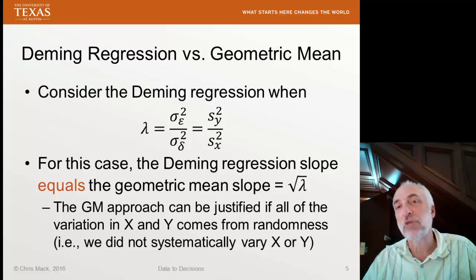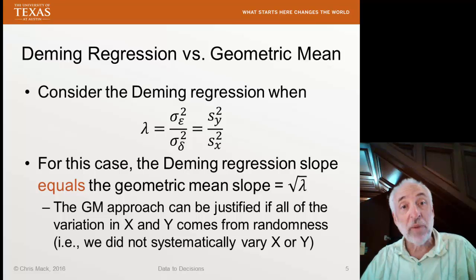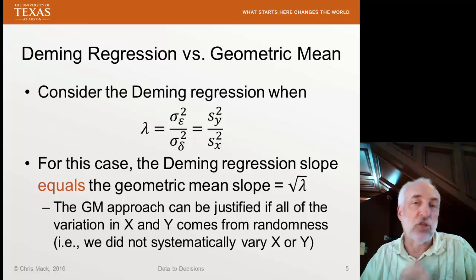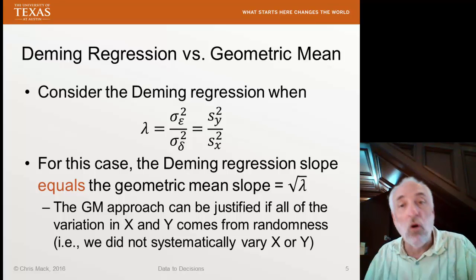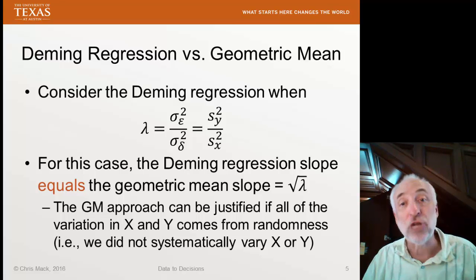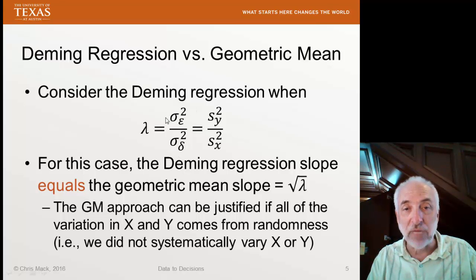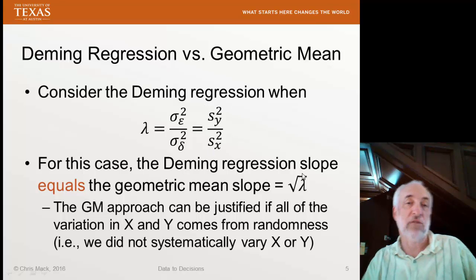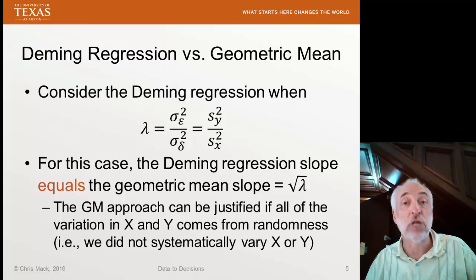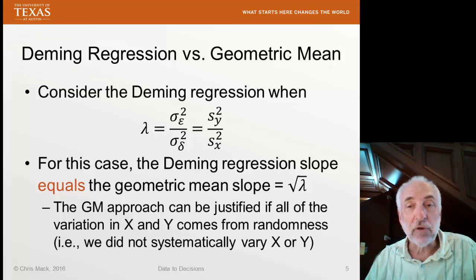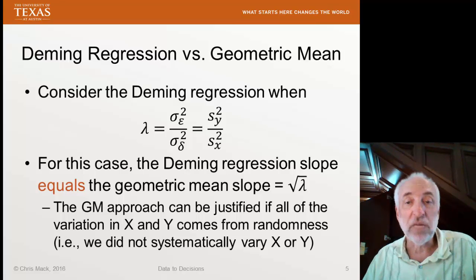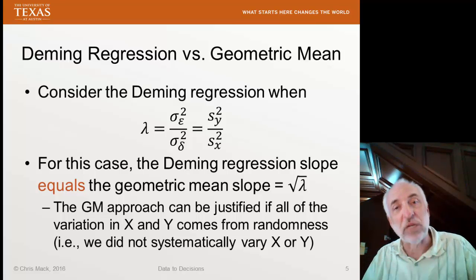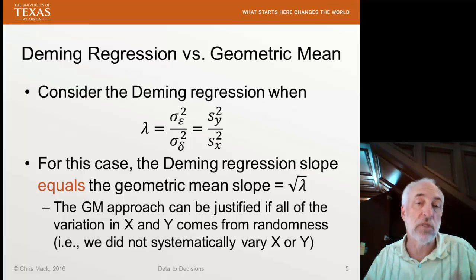Interestingly, Deming regression and geometric mean regression are related. In geometric mean regression, if all variation in x comes from the uncertainty in x and all variation in y from uncertainty in y — no systematic change in either — then lambda is simply the variance in y divided by the variance in x. In this case the Deming regression slope equals the geometric mean slope, which equals the square root of lambda. The geometric mean approach can be thought of as a special case of Deming regression in which all variation in x and y comes from randomness.